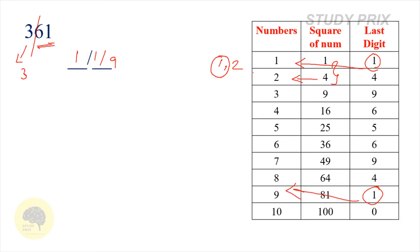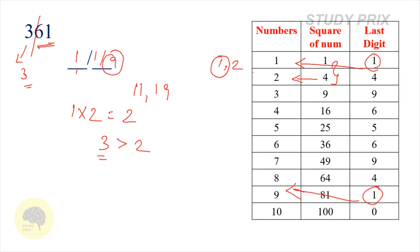So the square root of 361 must be either 11 or 19. To find which is correct, take the first digit 1 and multiply it with the next number, 2. The result is 2. Now compare with the first digit we ignored, which is 3. Since 3 is greater than 2, we take the maximum number — that is 9. Therefore the answer is 19. The square root of 361 is 19.